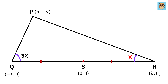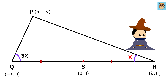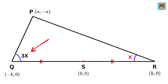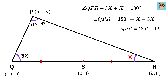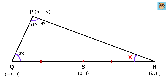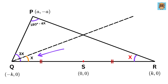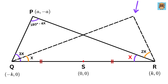Let us temporarily remove the line PS because we won't be needing it for now. Here comes the real magic. First of all, if angle PQR is 3X and angle PRQ is X, then angle QPR will be equal to 180 minus X minus 3X, or 180 minus 4X. Next, draw a line from point Q such that it makes an angle X with side QR. Then draw a line from point R such that it makes an angle 2 times X with side PR, and it meets the line from Q at some point U.